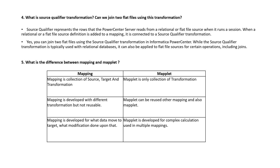What is the difference between mapping and maplets? A mapping is a collection of source, target, and transformations, whereas a maplet is only a collection of transformations. A mapping is developed with different transformations but is not reusable, whereas a maplet can be reused in other mappings. A mapping defines what data moves to the target and what modifications are applied, whereas a maplet is developed for complex calculations used across multiple mappings.